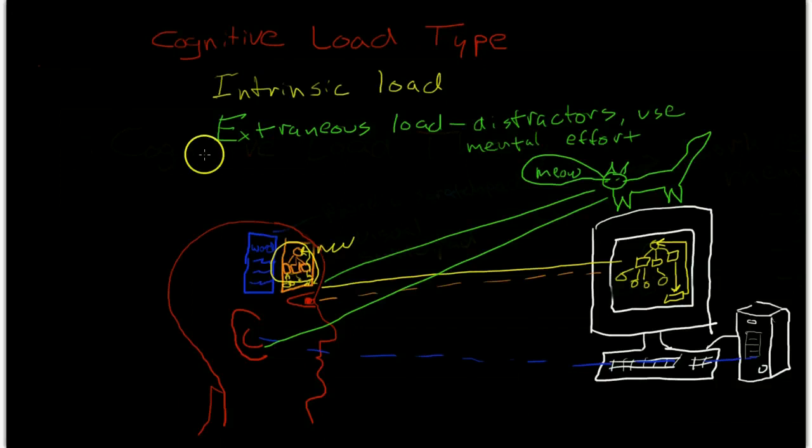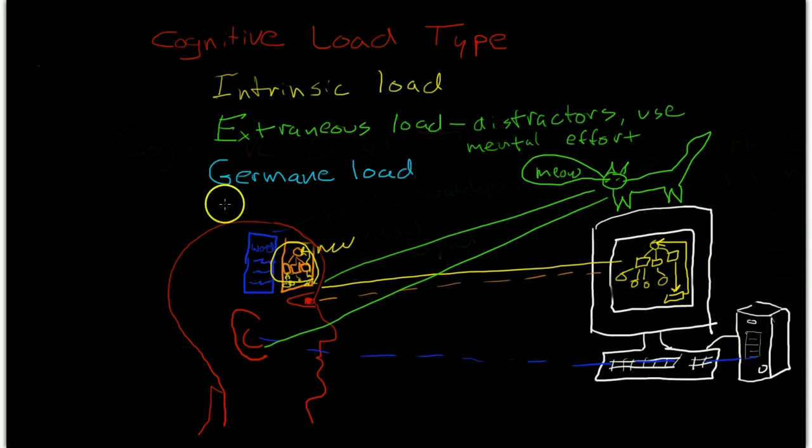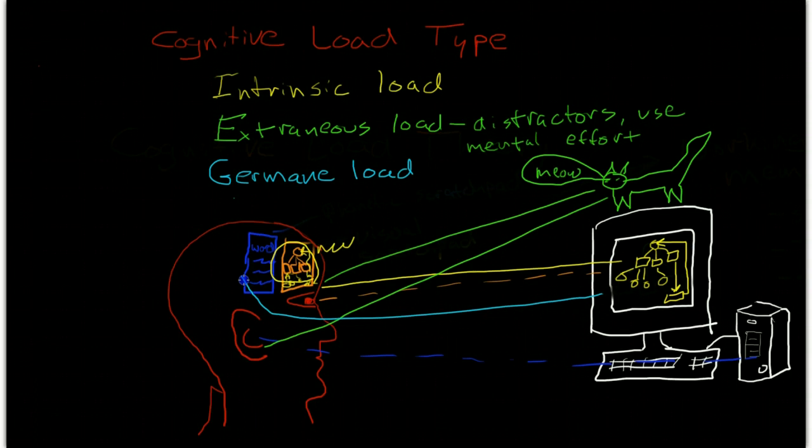The third type of cognitive load is called germane load. Germane load is mental processing effort that is going directly towards or supporting the development of schema in long-term memory. This is actually the mental effort of creating connections to existing knowledge or creating connections between novel information.